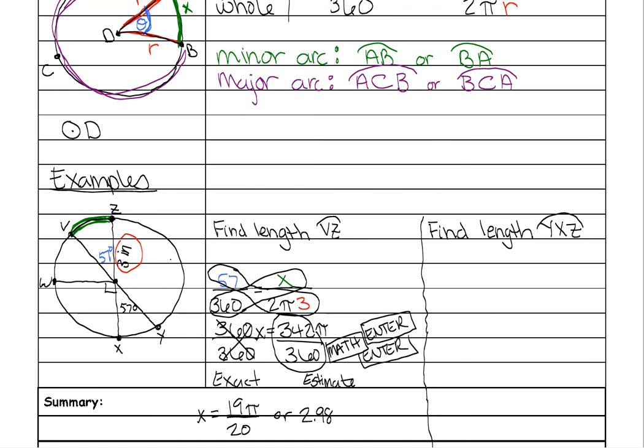And don't forget your units. In this case, they are inches. So the exact number is 19π over 20. The estimated number is 2.98 inches.